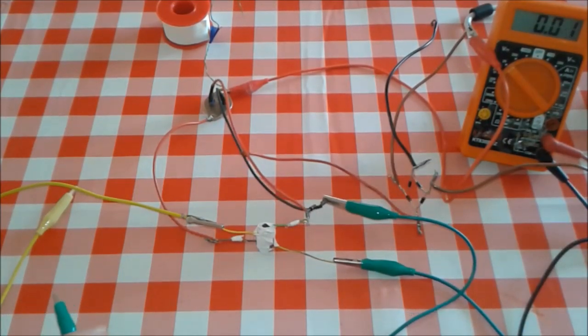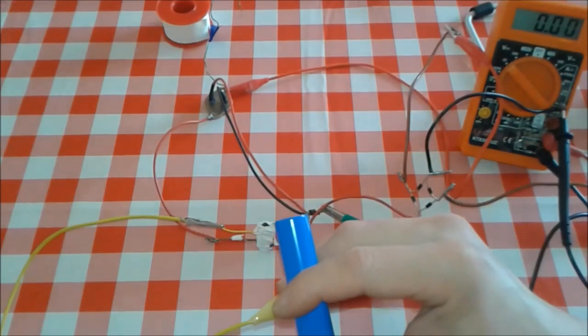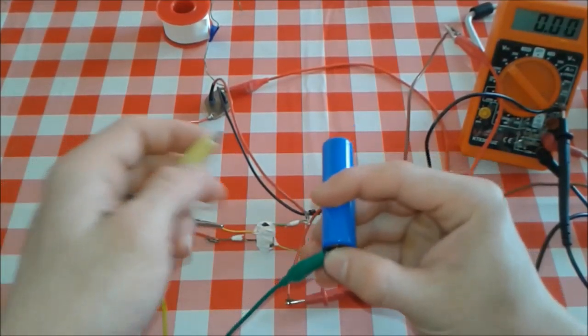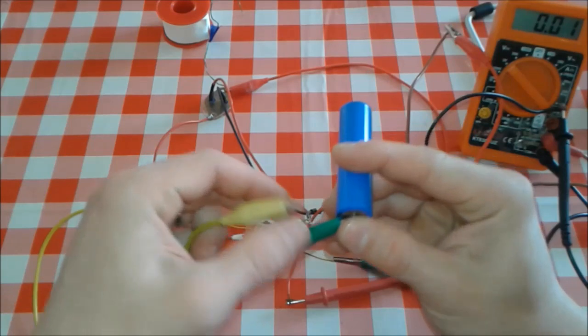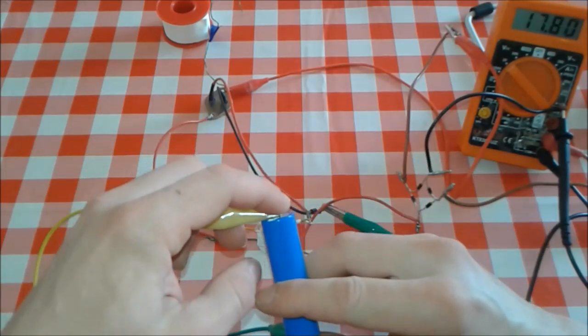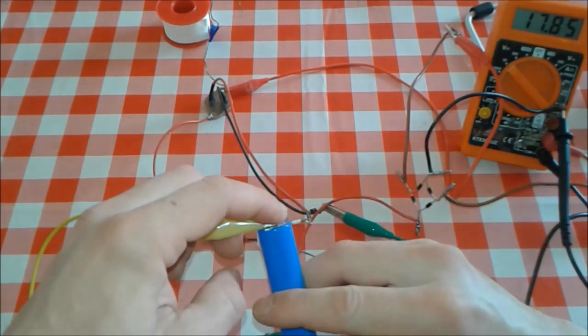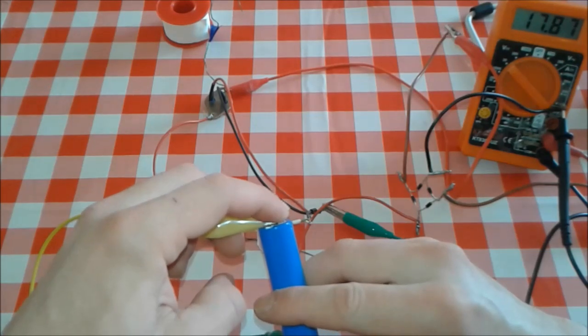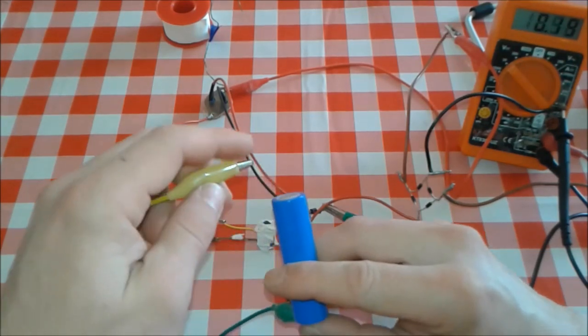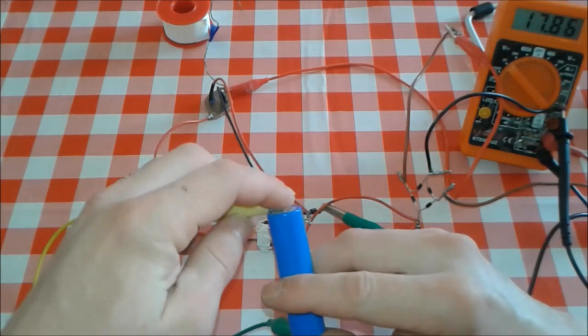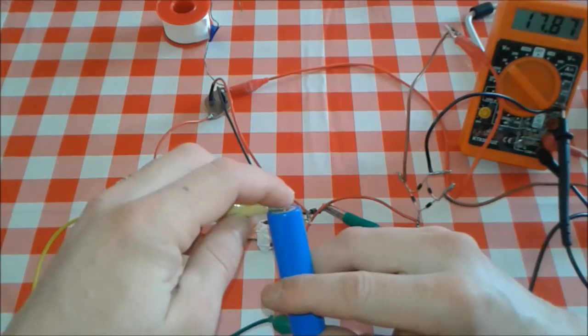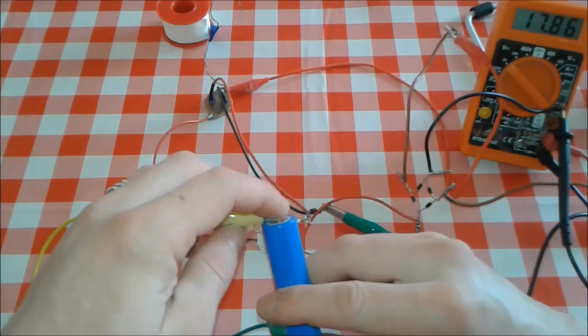Now we're gonna put the multimeter. Let's test it folks. Connect it all. We're gonna put this one to minus. And here we go folks, 17.85 volts with no load. Yeah! Now let's connect the 12 volt LED to see if it's gonna light or not.